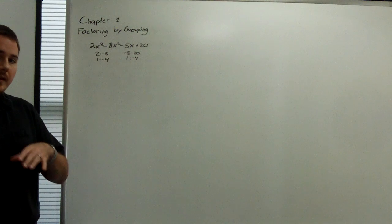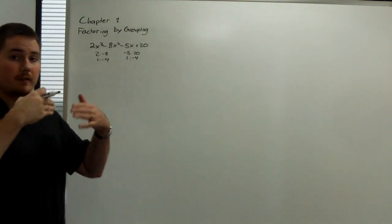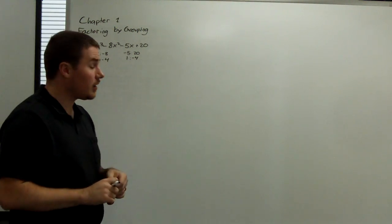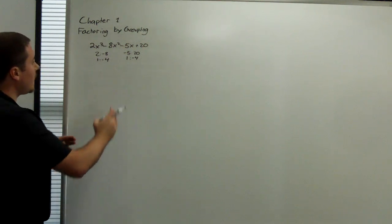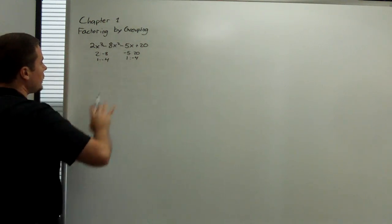Since it has the same ratio of terms between the first two and the last two terms, we know that it can be factored by grouping. So now imagine that these two terms don't exist.